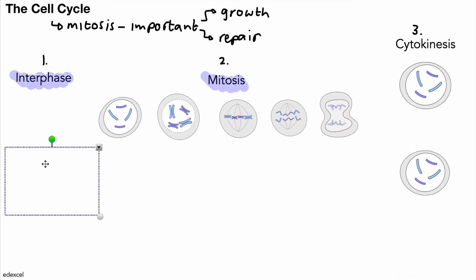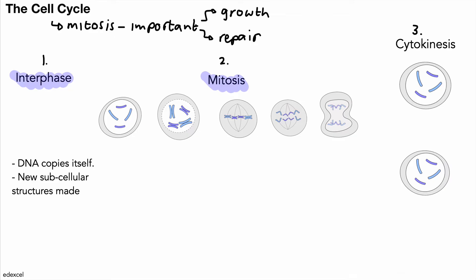The interphase part of the cell cycle is when, very importantly, the DNA copies itself — makes a copy of itself. There are also new subcellular structures made in the cell, for example mitochondria, ribosomes, and if it's a plant cell, structures like chloroplasts. That's the interphase, where the cell prepares itself for dividing.